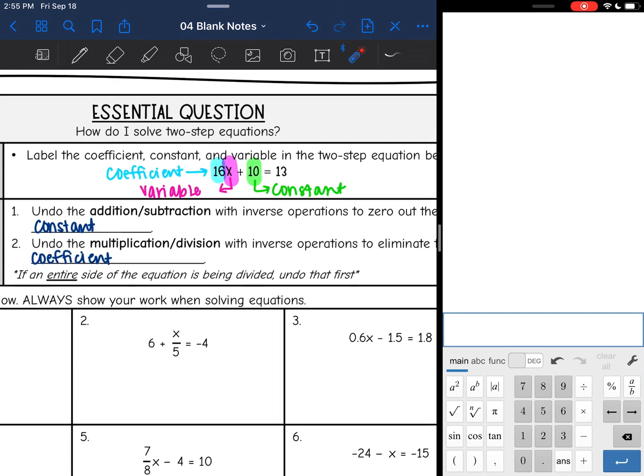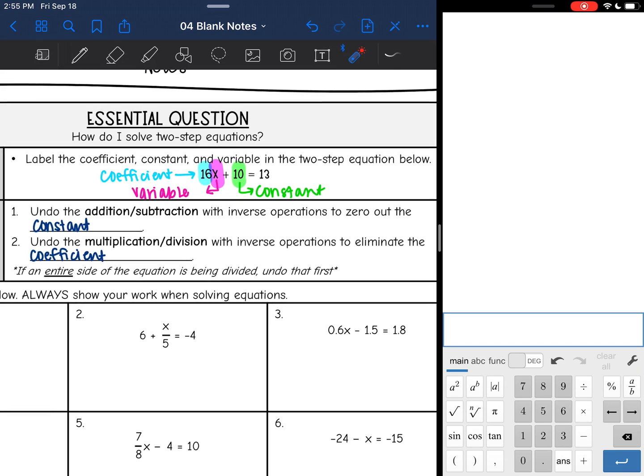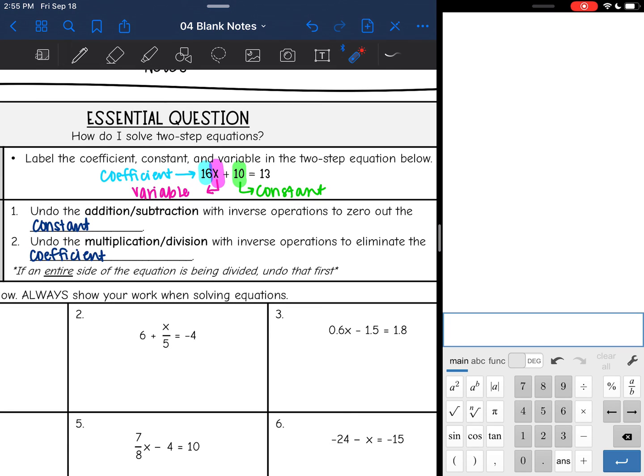Those words are important because those are going to help us figure out the steps to solve an equation. So the first thing that we're going to do is undo addition or subtraction with inverse operations to zero out the constant. So we're going to get rid of the number by itself first, and then we will undo multiplication or division with inverse operations to eliminate the coefficient.